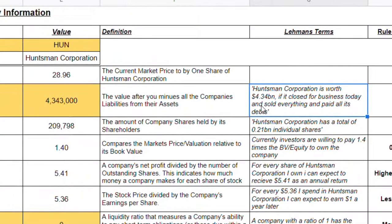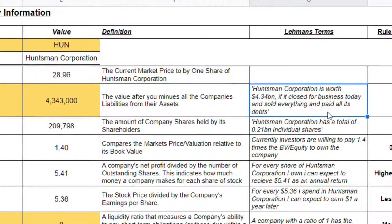So now we have the book value. In layman's terms, the spreadsheet tells us that Huntsman Corporation is worth $4.34 billion if it closed for business today, sold everything, and paid all of its debts. Think of it like an individual when they pass away — their book value is their assets such as money in the bank, pensions, and properties, minus liabilities like mortgage, credit card debt, and inheritance tax. The book value is what is left over.